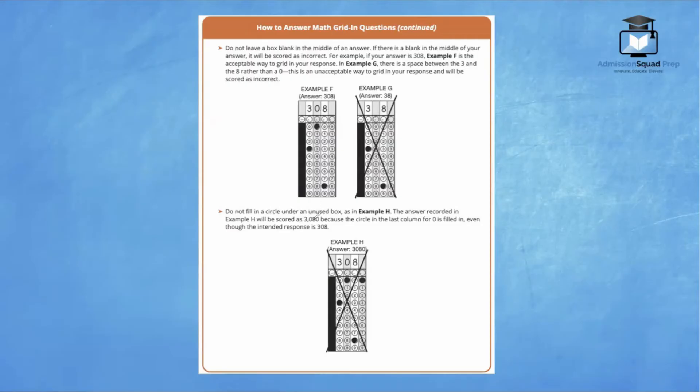Do not fill in a circle under an unused box, as in example H. The answer recorded in example H will be scored as 3080 because the student bubbled in the 0 right here, even though the intended response is 308. So the bubbled in responses is what's going to be coded into the system. So be very careful to only bubble in that which you've written here at the top.